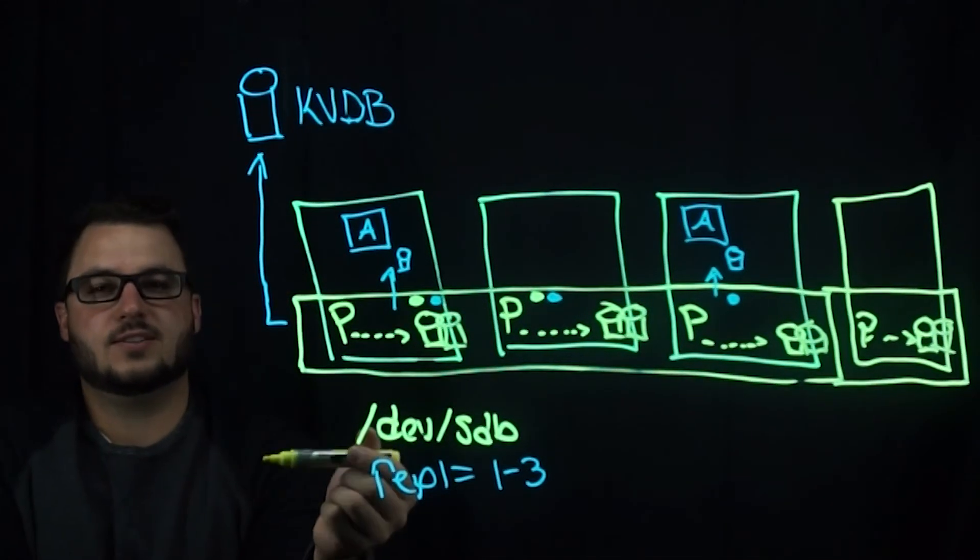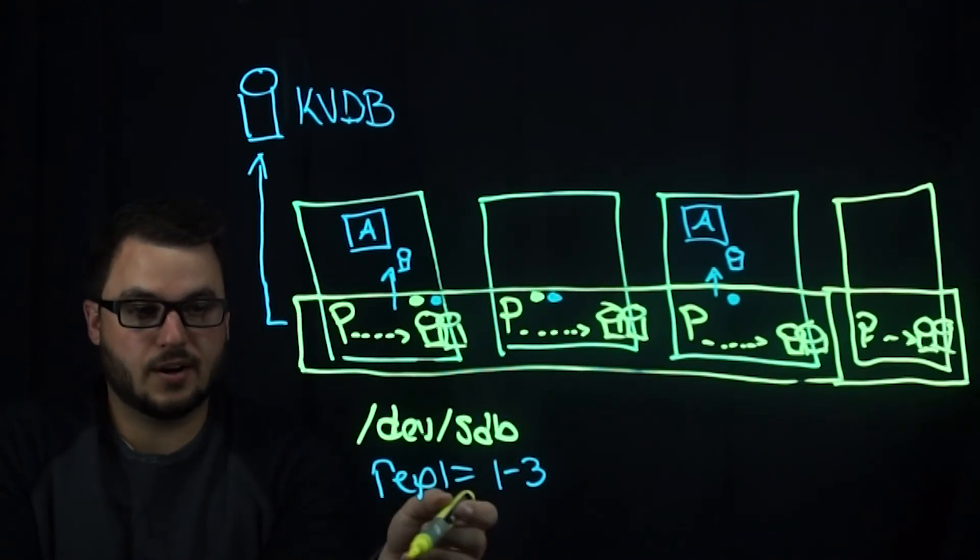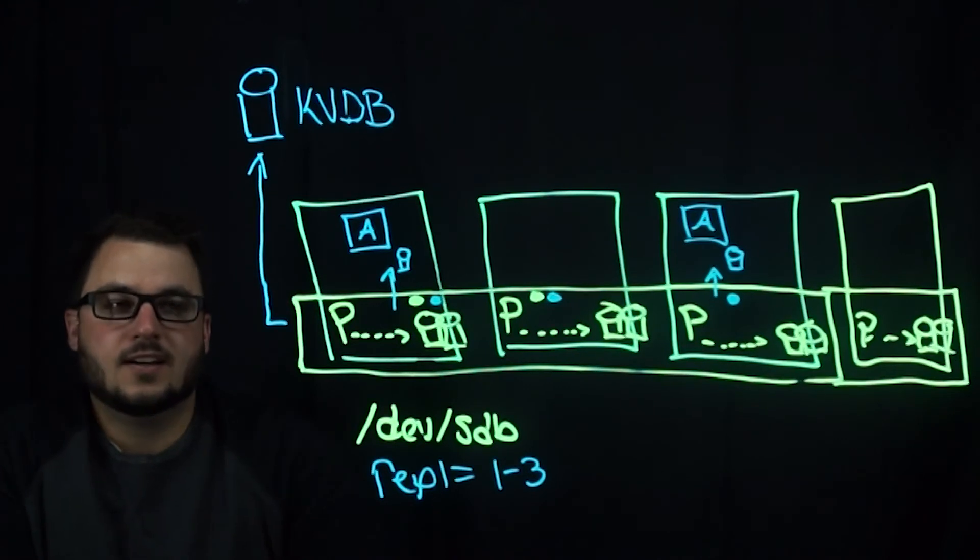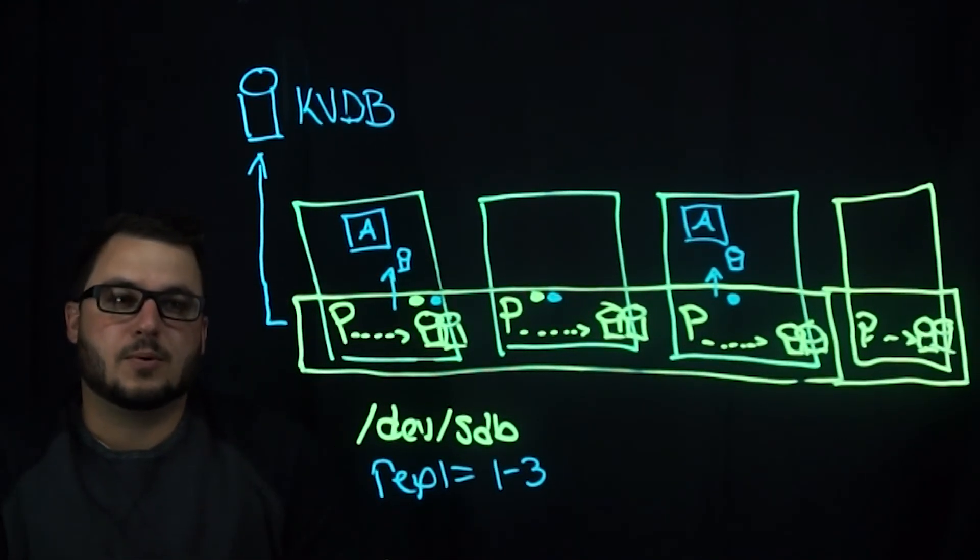We will put a link to the documentation that gets you started with Portworx, as well as a lot of these parameters that I mentioned. There's a lot of other ones like iopriority and snapshot schedules that you can set per volume. Stay tuned for more videos. This is a basic overview of Portworx 101, and we'll talk about things like replication and how you deploy it on Kubernetes in other videos. Thanks for watching.